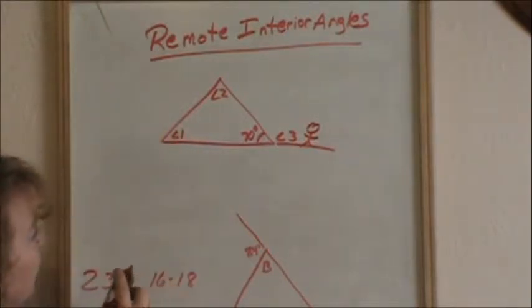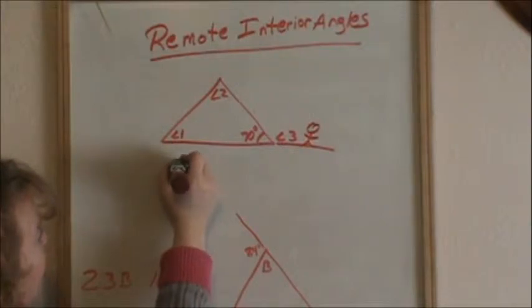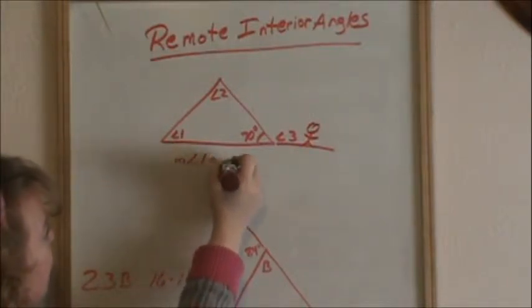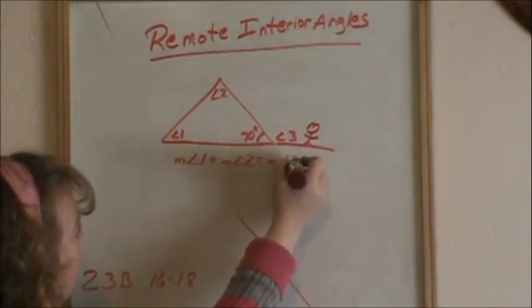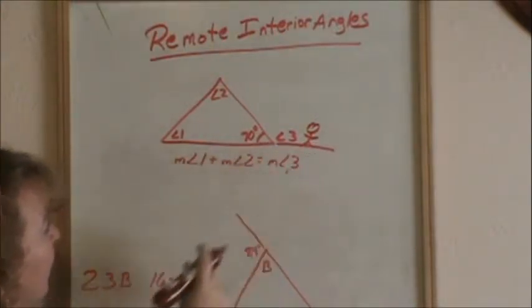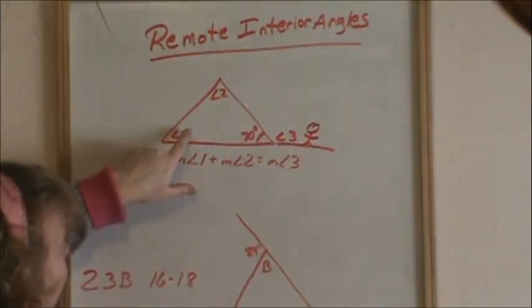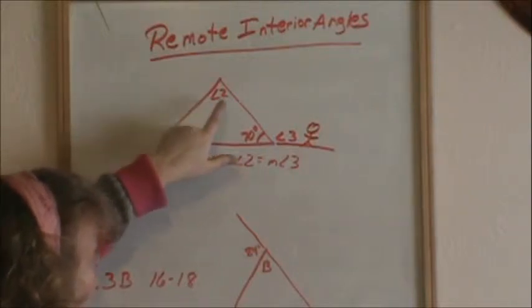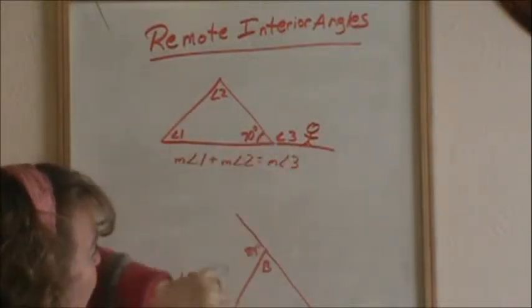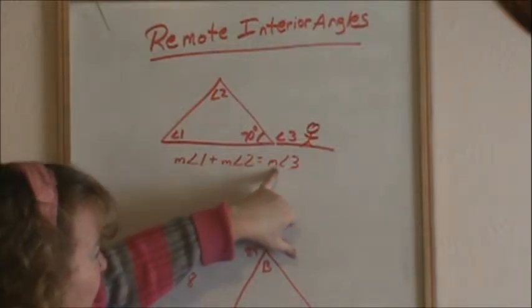One thing that we're going to find out about remote interior angles is that the measure of angle 1 plus the measure of angle 2 is equal to the measure of angle 3. So the remote interior angles will add up to be that exterior angle.